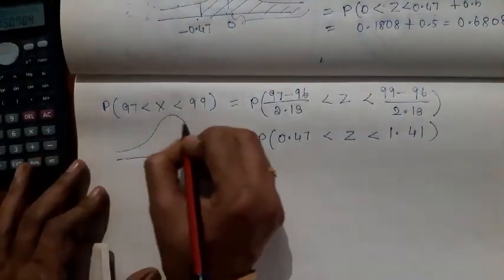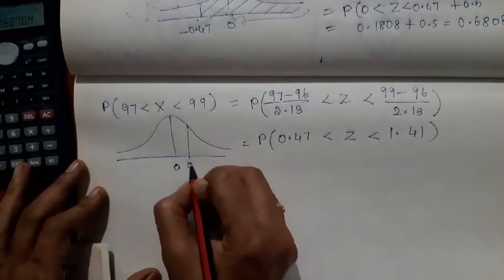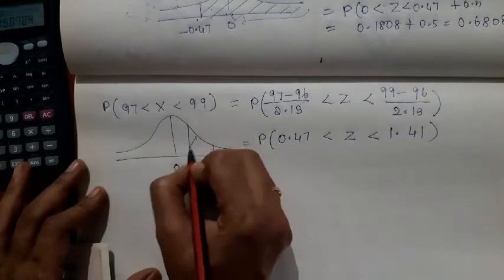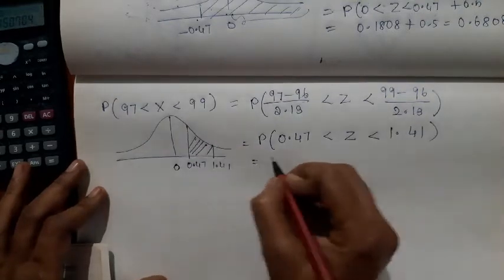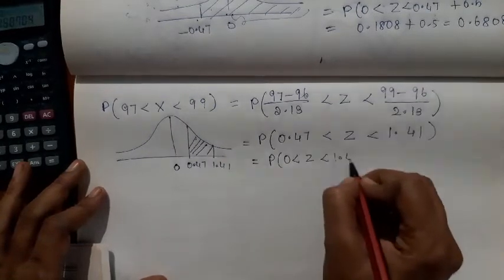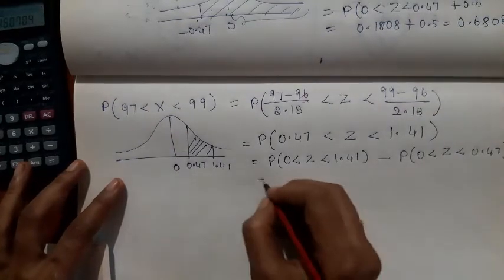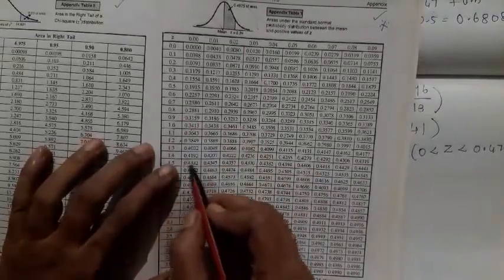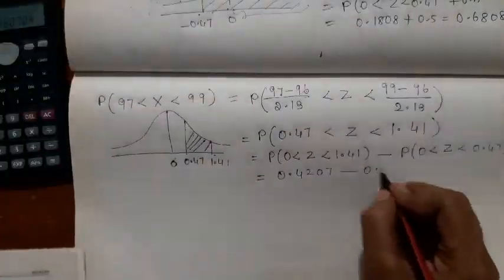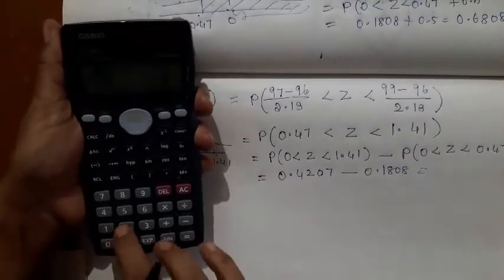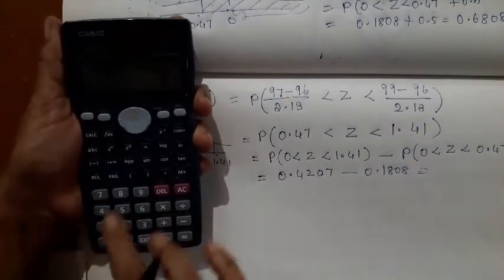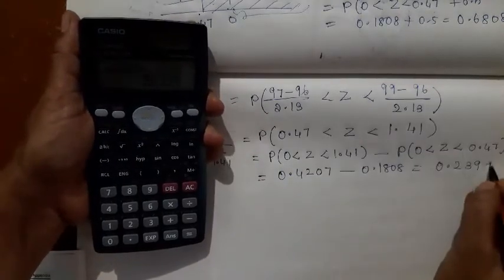Draw the curve. 0.47 will be after 0, and 1.41 will be after that — you need the area between them. For this, compute probability of 0 less than Z less than 1.41, minus probability of 0 less than Z less than 0.47. Looking up the table: for 1.41, the area is 0.4207; for 0.47, the area is 0.1808. So 0.4207 minus 0.1808 equals 0.2399.